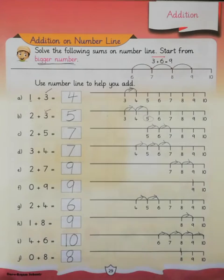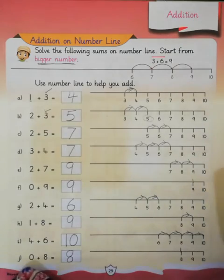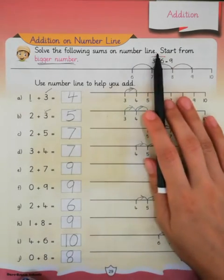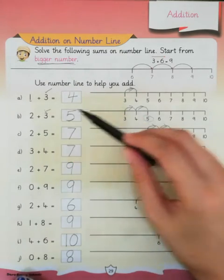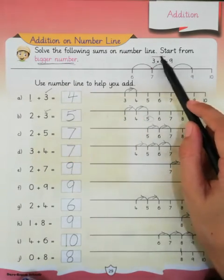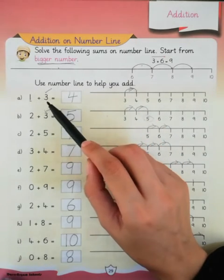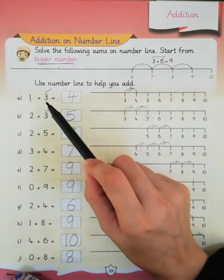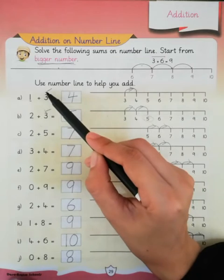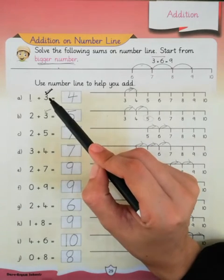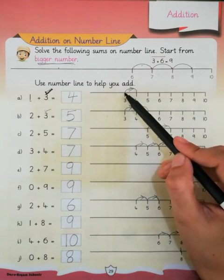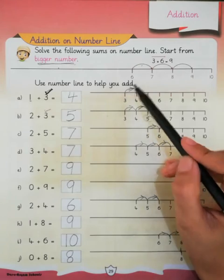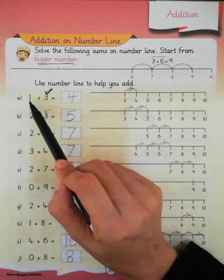Now come to page number 29. Here we have sums of addition. Solve the following sums on a number line, starting from the bigger number. You have to solve starting from the bigger number. You can see we have one plus three, and the bigger number is three. We start from three — that means we start our jump from three on the number line, and we have to do just one jump.